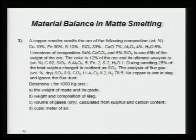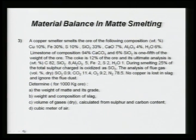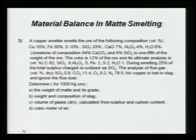Determine per 1000 kg of ore: A — weight of matte and its grade; B — weight and composition of slag; C — volume of gases dry calculated from both sulfur and carbon balances; and D — cubic meters of air. These are the problems I will be working through today, plus one heat balance problem.